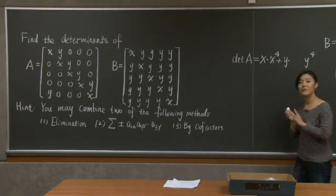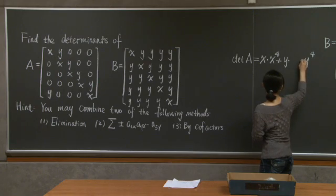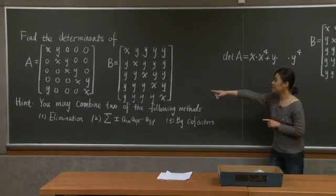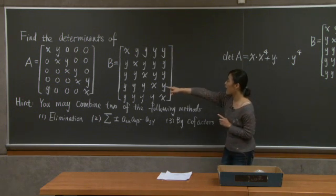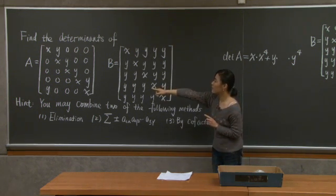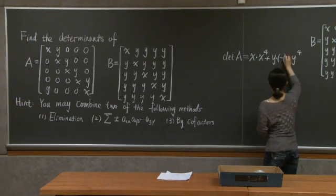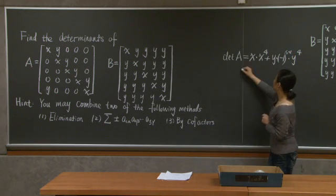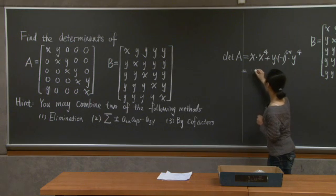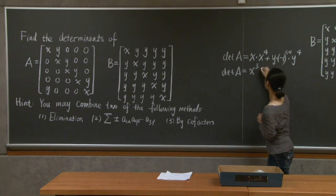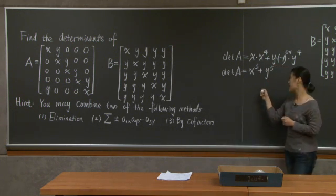So I have a y to the power of 4 here, but not quite. In principle, there should be another factor here indicating the sign. And the sign in this case, well because y is the entry in the fifth row in the first column. So this factor should be negative 1 to the power of 5 plus 1. And of course, it's just 1. So the determinant of A is simply equal to x to the fifth power plus y to the fifth power. Did you get the correct answer?